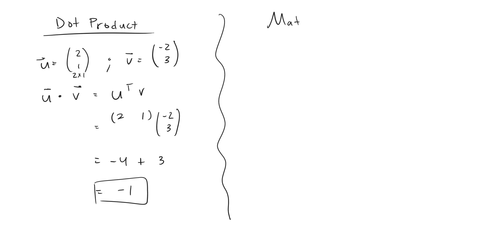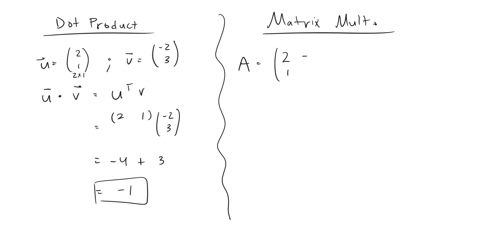Now that we know about the dot product, let's talk about matrix multiplication and what a matrix is. We've talked about vectors, but let's imagine we took those vectors and put them into a matrix where each column of the matrix was one of those vectors — here we have U, and here we have V. A matrix is just a little different from a vector; when we refer to something as a matrix, we're commonly referring to something that has more than one row and more than one column.